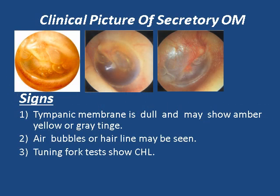The signs of secretory otitis media: by otoscopy, we find a dull tympanic membrane which may show an amber-yellow or grayish tinge. We can sometimes see air bubbles or a hairline from the fluid level, as seen in the photos. Tuning fork tests will show conductive hearing loss — bone conduction is better than air conduction.